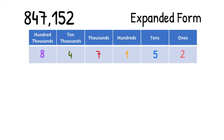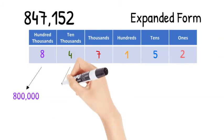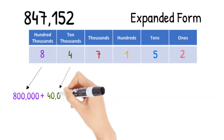With expanded form, we want to add the values of each digit in our number. Let's start with the hundred thousands place. We know this 8 is valued at 800,000. Now let's add the value from the ten thousands place. There are 4 ten thousands, so let's add 40,000.